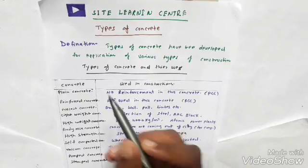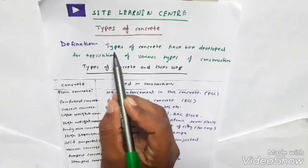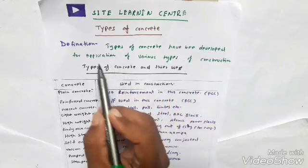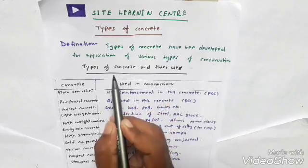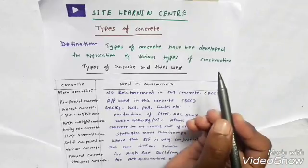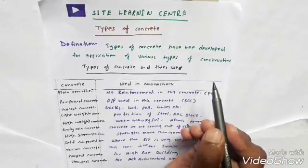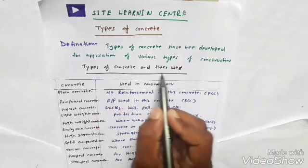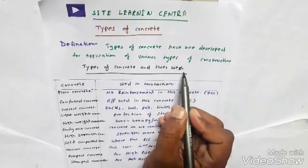First, we are going to start with the definition of concrete. The types of concrete have been developed for application in various types of construction. We have many types of concrete that are applied in various types of construction, and we are going to start with their uses.